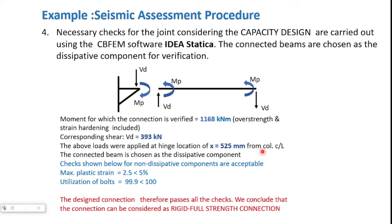An IdeaStatica verification is carried out, which shows that all the non-dissipative components are acceptable and pass all the checks. In this case, we expect the formation of the plastic hinge in the connecting beam. Accordingly, the column and the end plate are the non-dissipative components for which the checks are required. The non-dissipative components have a maximum plastic strain of 2.5%, which is less than 5%, and the bolts have a utilization ratio of 99.9%. Therefore, the design connection passes all the checks, and we conclude that the connection can be considered as a rigid full-strength connection.